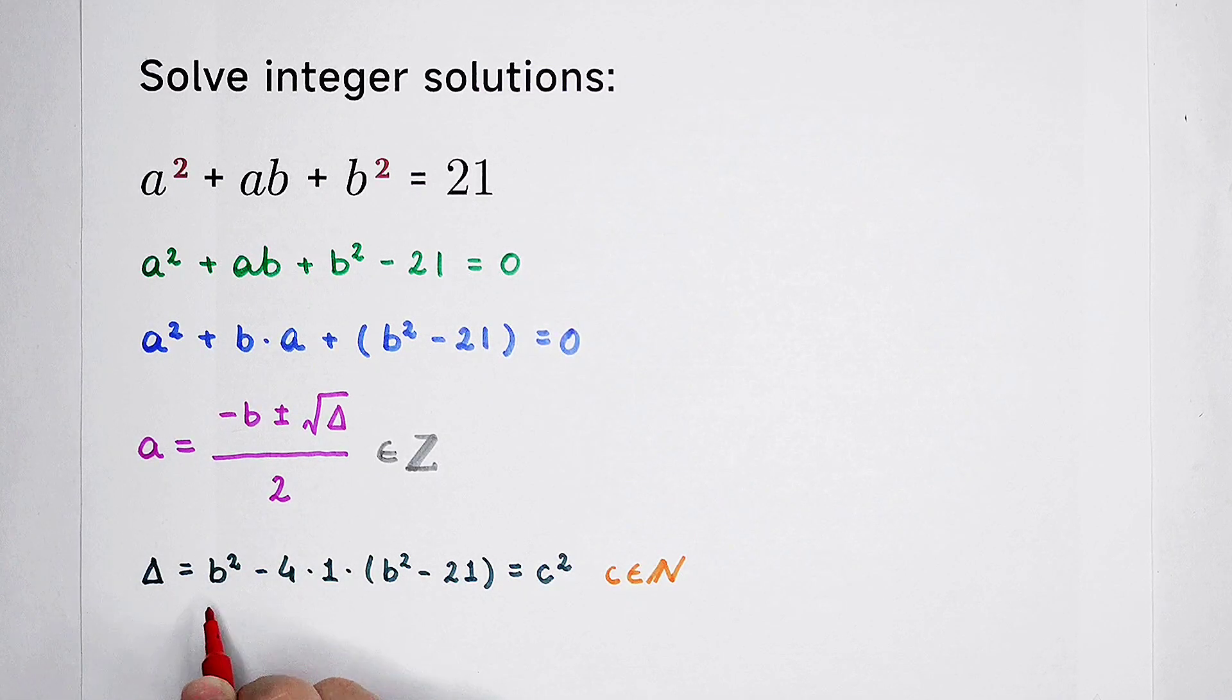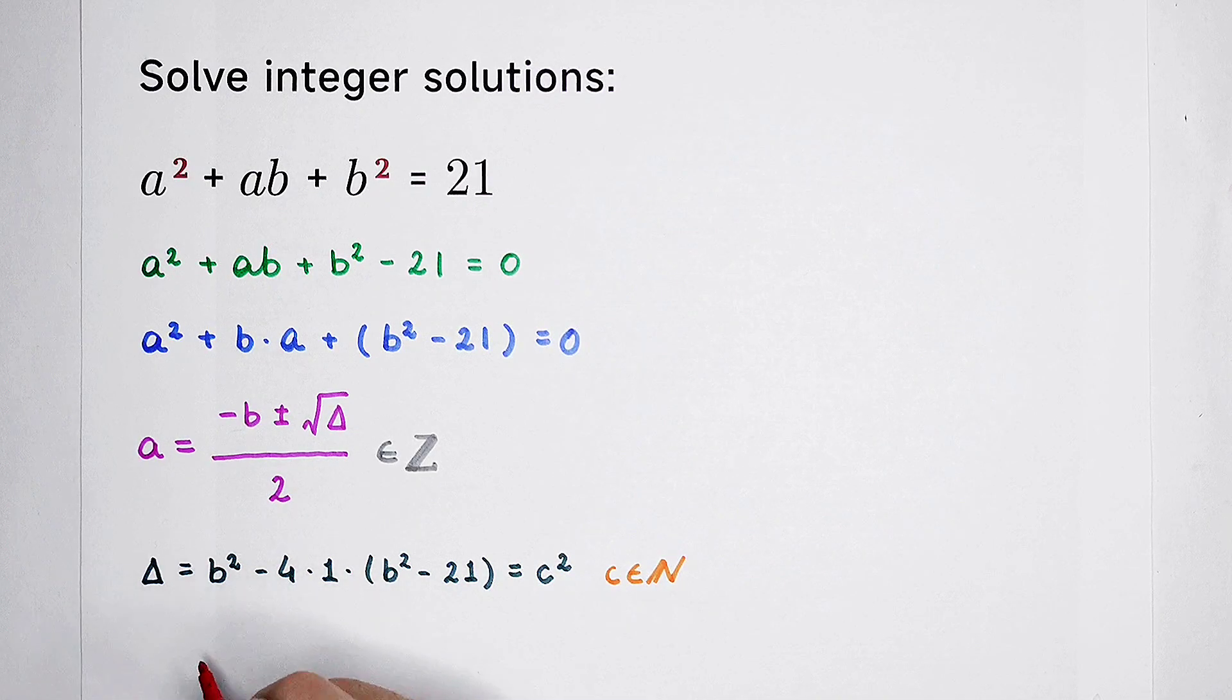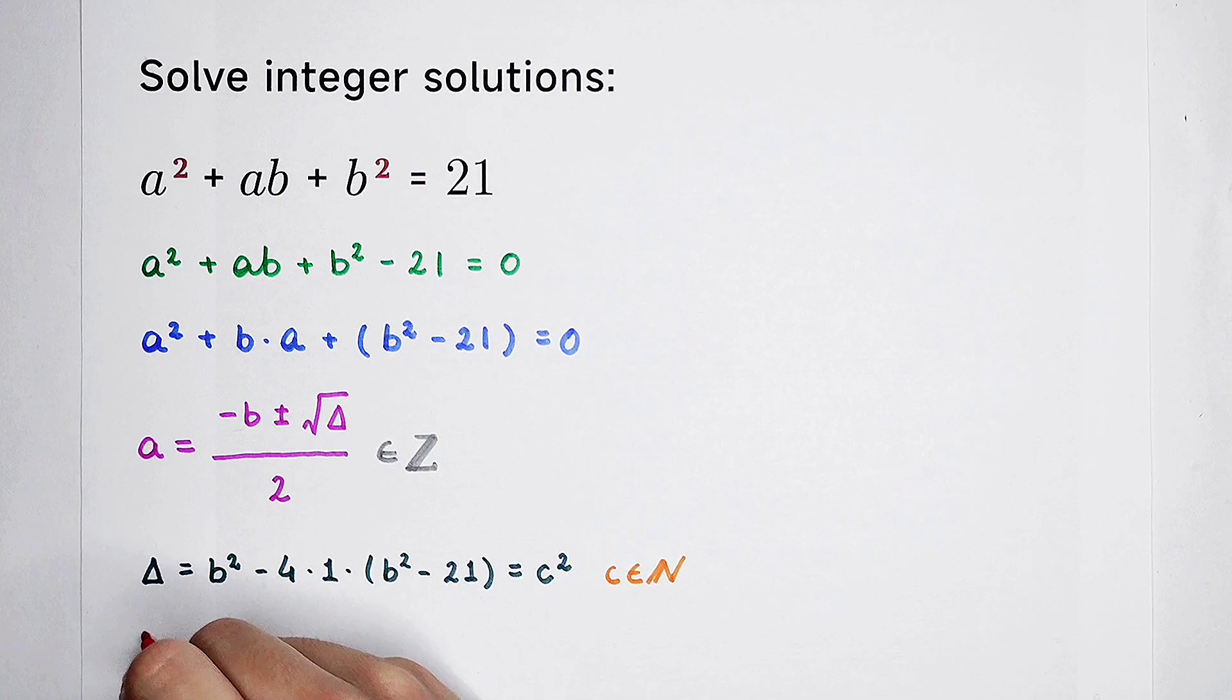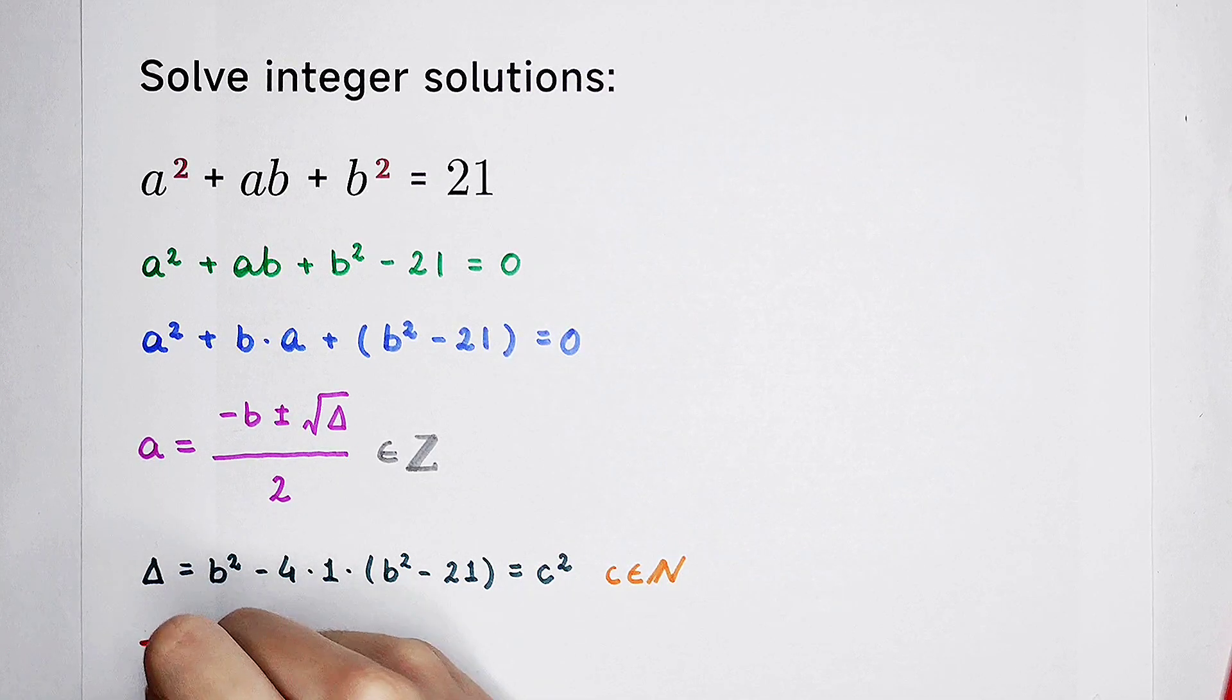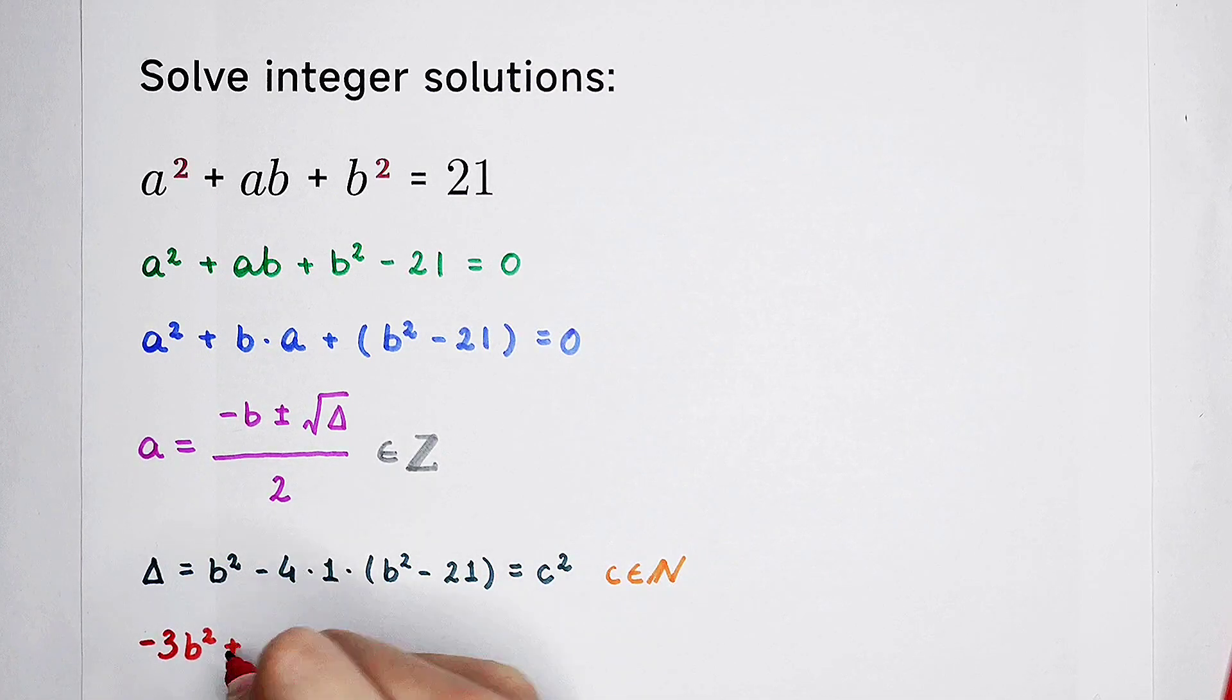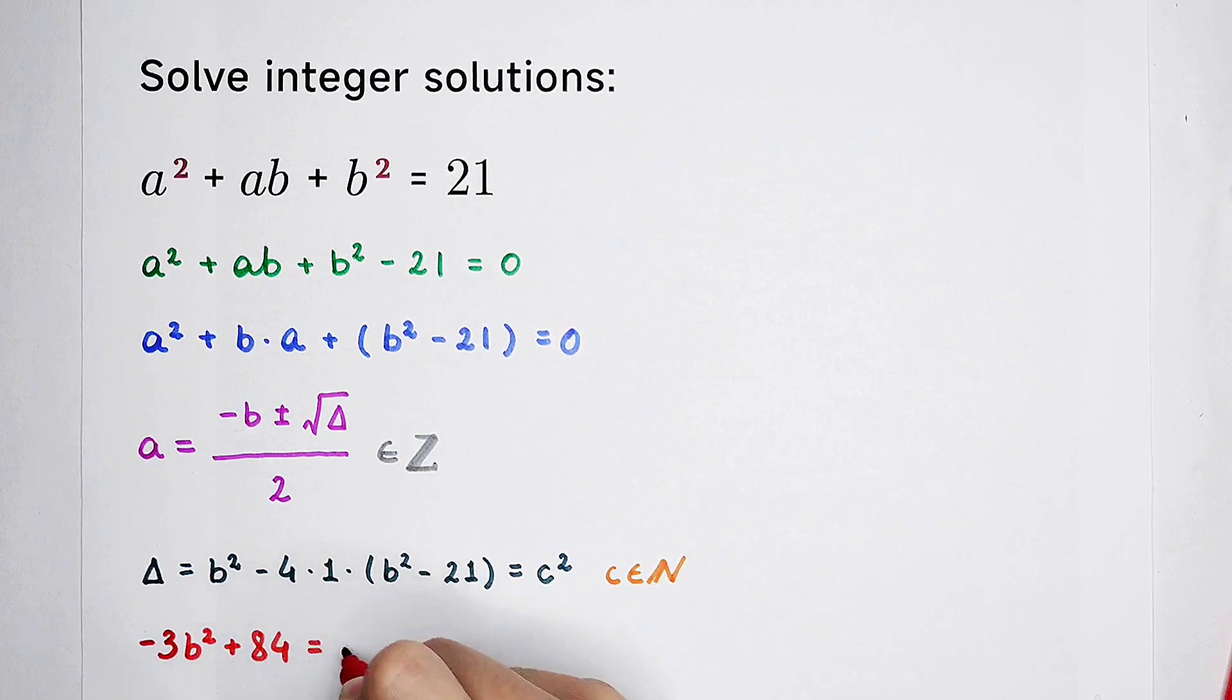Now, simplify. b squared minus 4b squared, then plus 4 times 21. So, what can we get? We can get that negative 3b squared, and then plus 84. It is c squared.